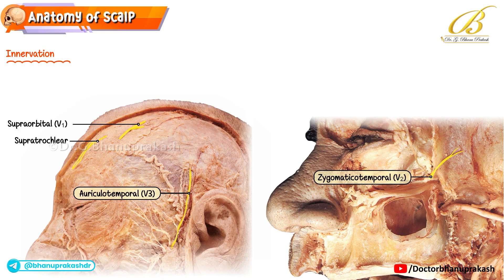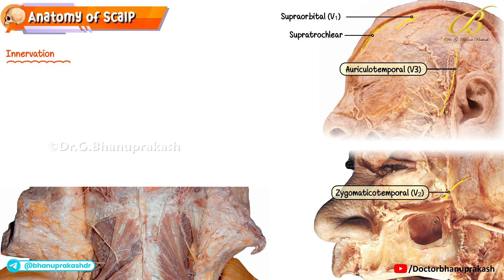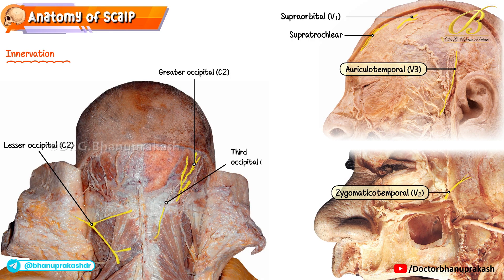Moving posteriorly, sensation behind the ear and the upper lateral occipital region comes from the lesser occipital nerve. Most of the posterior scalp up to the vertex is supplied by the greater occipital nerve — the dorsal ramus. The lowermost occipital region is covered by the third occipital nerve.